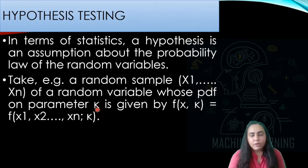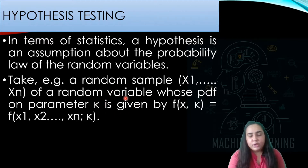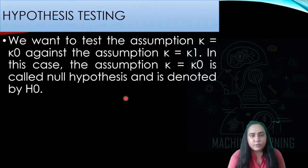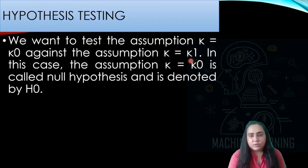If you have already watched the previous videos on PDFs and probability distributions, you understand this. Given this data, we want to test the assumption that k is equal to k0 against the assumption that k is equal to k1. So there are two assumptions: k equal to k0 and k equal to k1.